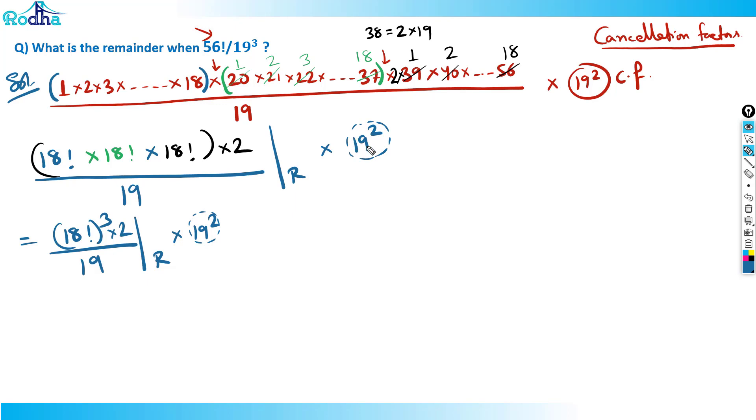Now as per Wilson's theorem, I know that 18 factorial by 19, remainder is minus 1. Wilson's theorem states that for any prime number p, (p-1) factorial upon p will give a remainder of minus 1. So 18 factorial by 19 remainder is minus 1. So I can write this is minus 1 cubed into 2 upon 19. This actually becomes minus 2 and this is 19 square.